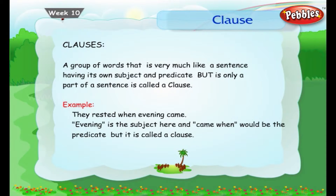Now let us look at clauses. A group of words that is very much like a sentence, having its own subject and predicate, but is only a part of a sentence, is called a clause. Example: 'They rested when evening came.' Evening is the subject here, and 'came' would be the predicate. But it is called a clause.